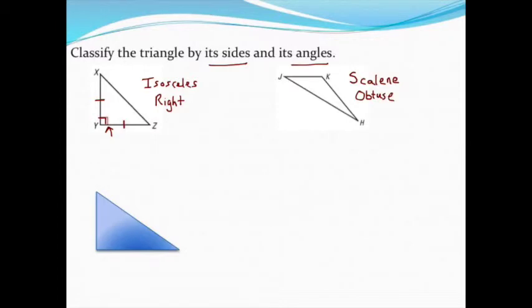The third and final triangle we'll take a look at: again, I have no tick marks on the sides, so I'm going to say this is a scalene triangle. All sides are different lengths, and I can see that that's pretty clear.